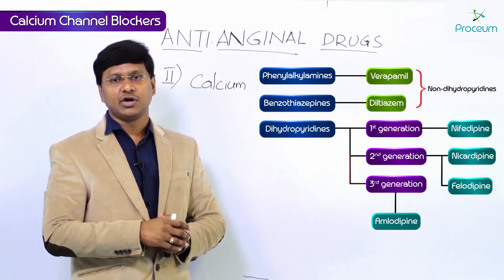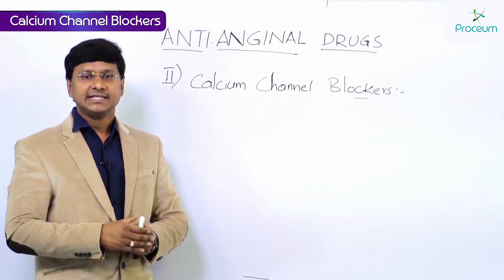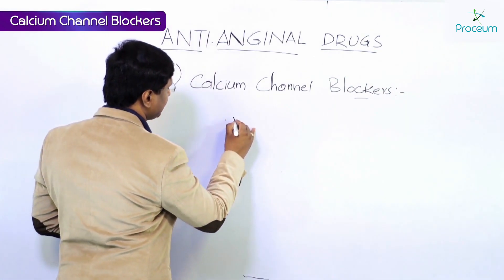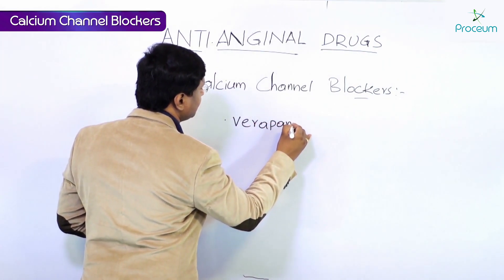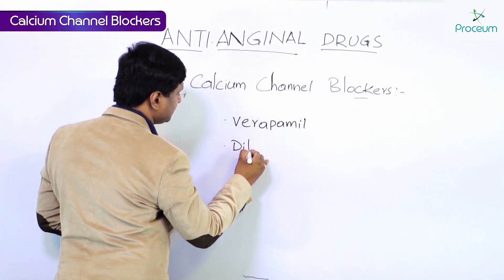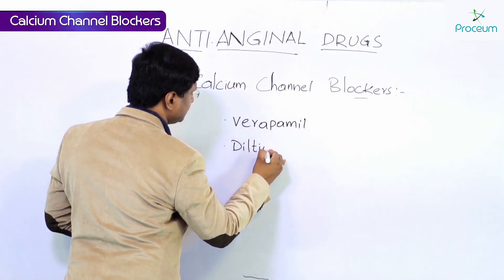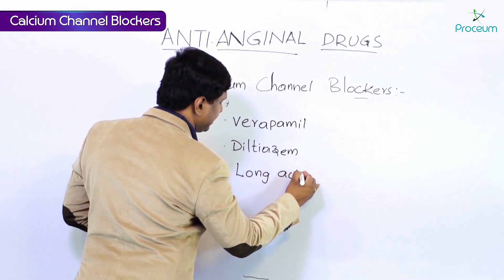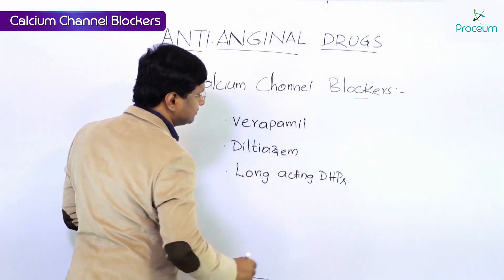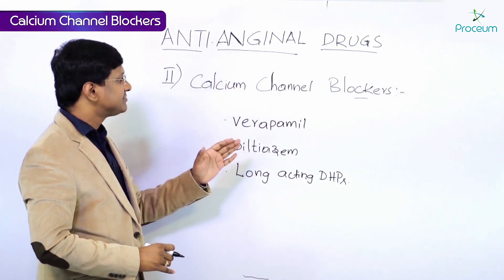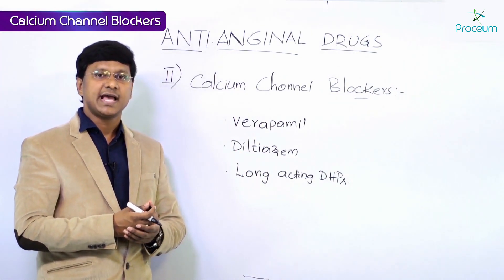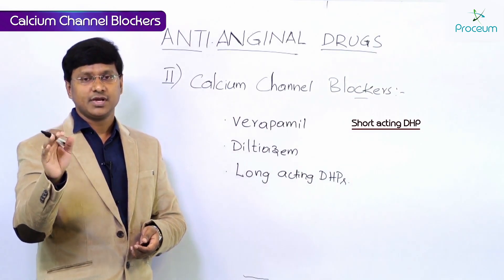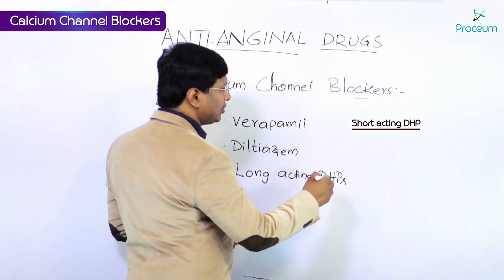Now, the calcium channel blockers used in the treatment of angina are: number one, verapamil; number two, diltiazem; number three, long-acting dihydropyridines. These are the calcium channel blockers used in angina. Remember an important point: short-acting dihydropyridines — which include nifedipine — should be avoided.